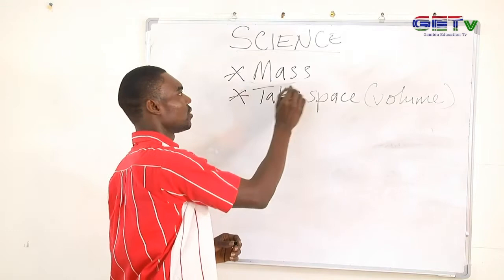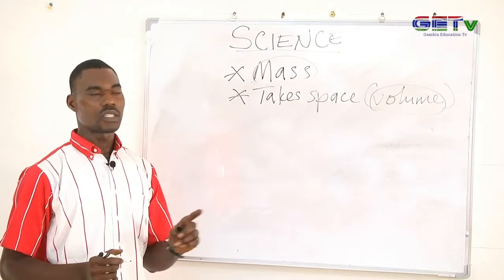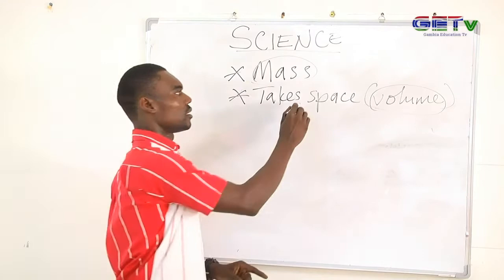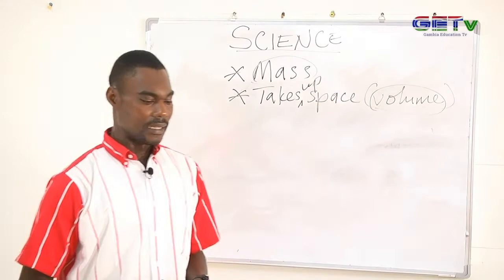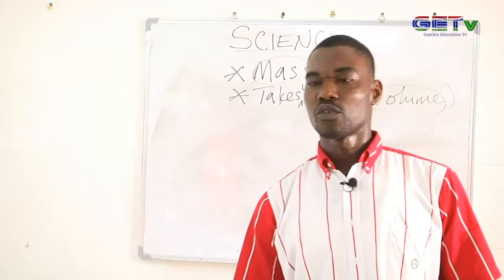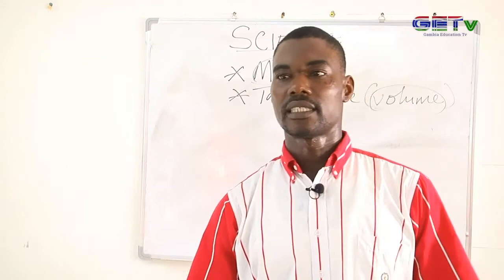Take note of these two important terms: mass and volume. Everything around us in our surroundings can be classified as matter because every substance has mass and takes up space. Whether we can touch or see a substance, so long as it has mass and takes up space or volume, it is matter.